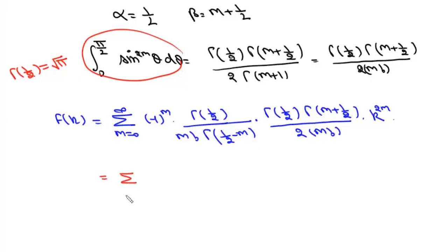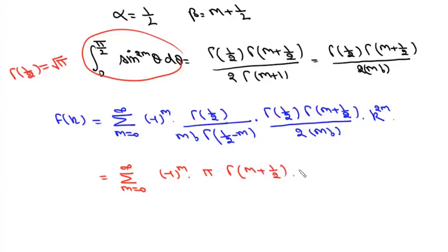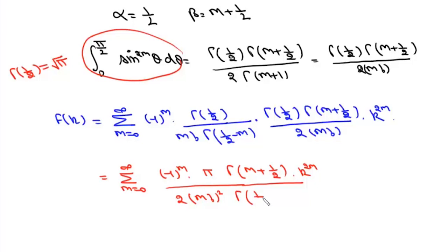We can write this as the summation where m varies from 0 to infinity of (-1)^m times pi times Gamma(m plus 1/2) times 2 k^(2m) over 2 times factorial(m) squared times Gamma(1/2 minus m).